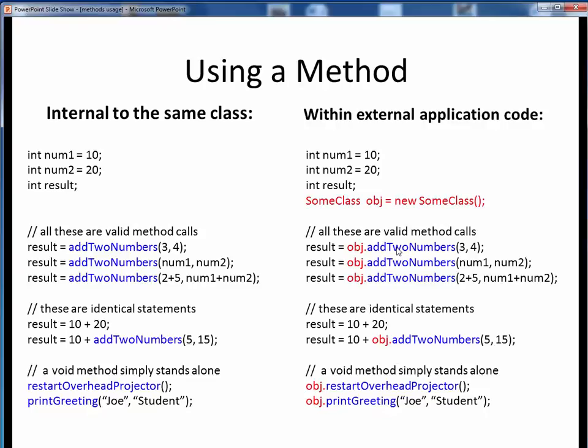If the method is external to the class as part of some reusable component, we first have to declare an object of that type and then call the method using dot notation in the context of that object. Otherwise, it's pretty much the same between left and right.